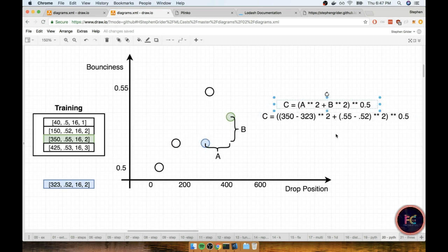So up here is the Pythagorean theorem written out in common notation. So we want to get this distance A on the x-axis between the two points. So that would be the difference in their drop position. So we would take the 350 minus the 323 of our prediction point. So there's 350 minus 323, and we would square that.